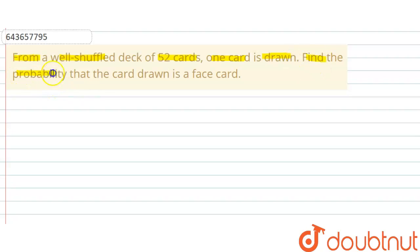So here the total number of cards is 52, and if one card is drawn from a well-shuffled deck of 52 cards, we have to find the probability of face card. So first we will understand what is a face card.